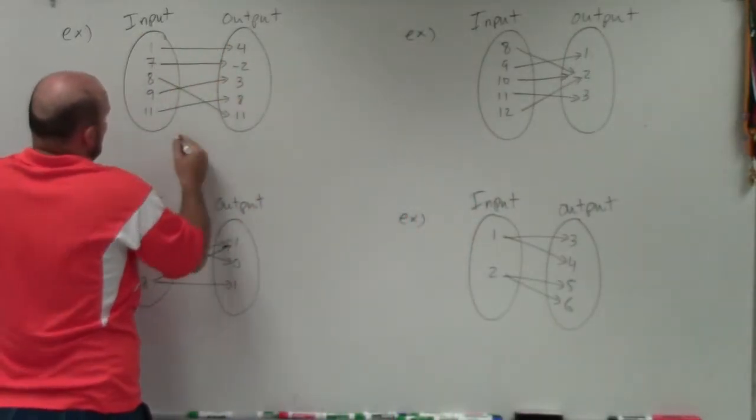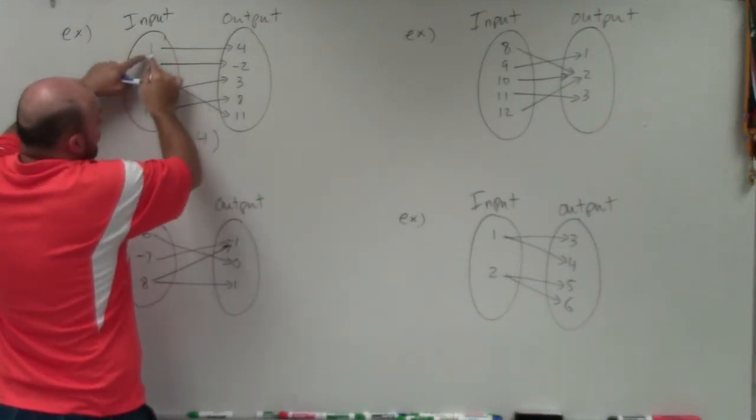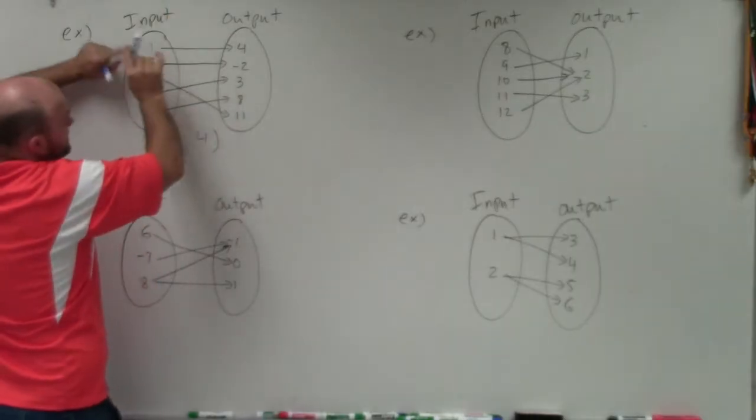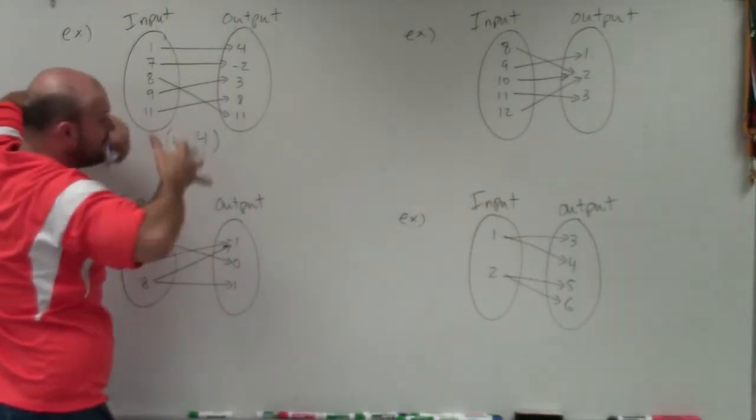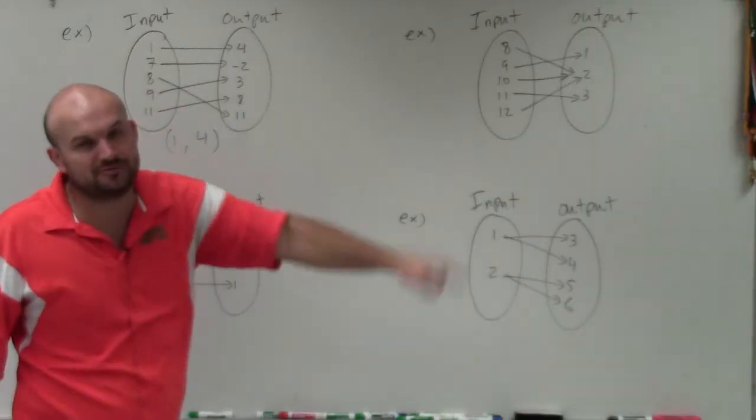So basically, 1 maps to 4, and that's the representation. What they're showing is if you have your input 1, your output is going to be 4. Now remember, to be a function, every single one of my inputs has to uniquely map to an output.